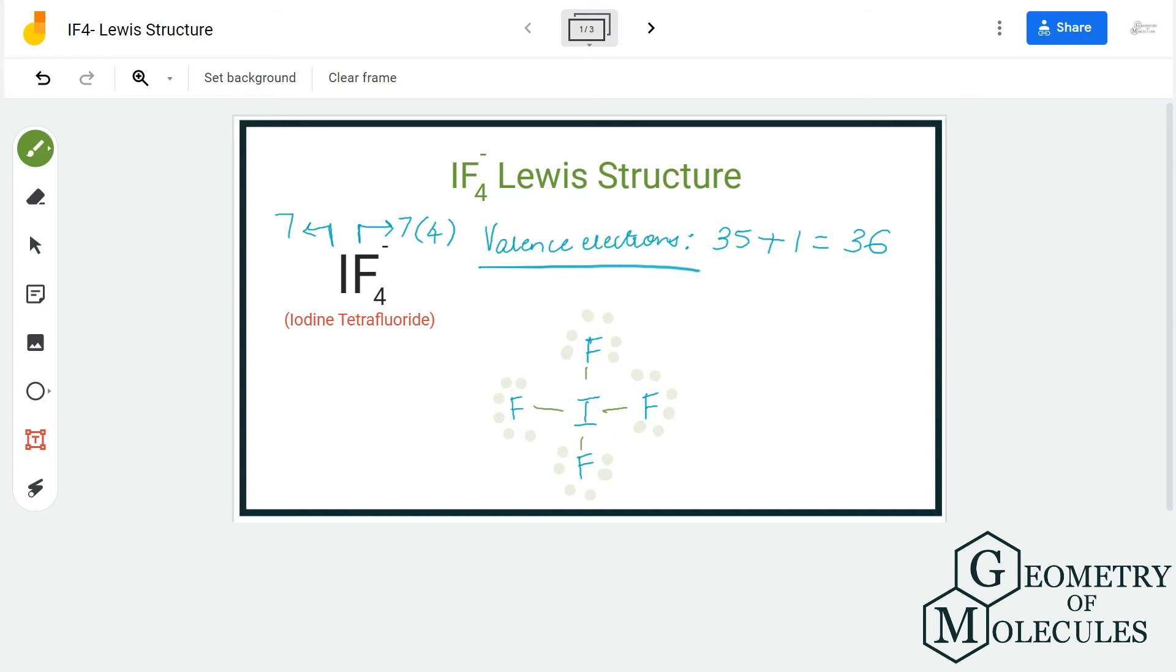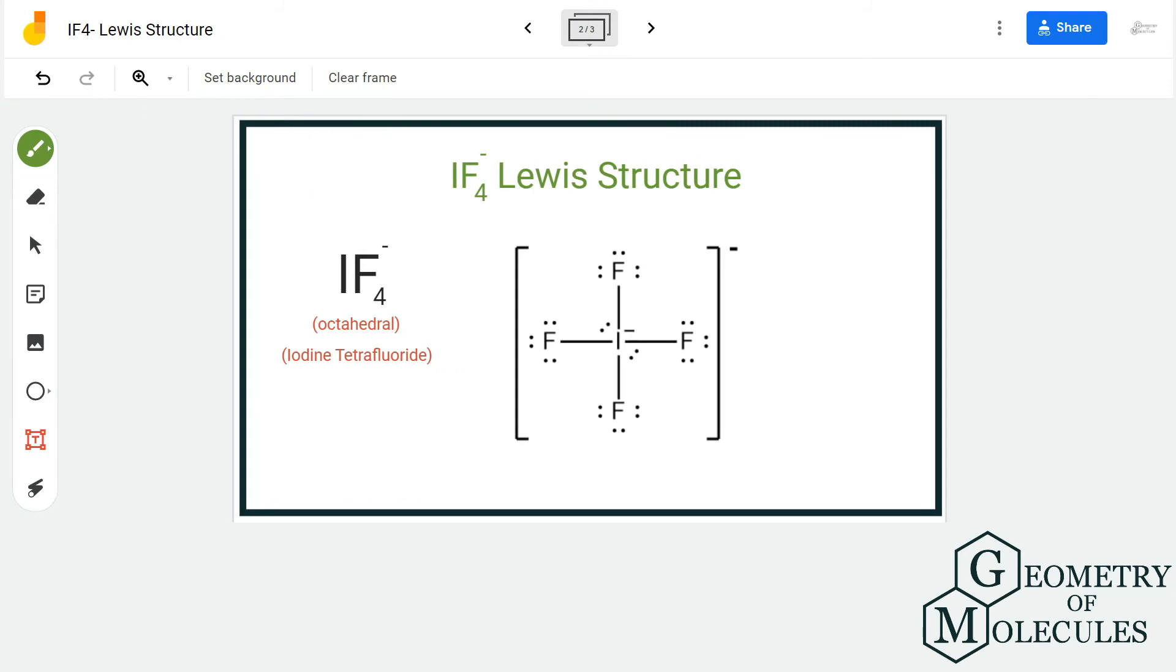Now, fluorine atoms already have complete octets, but if you look at iodine atom, it has shared its electrons with fluorine atom but it will accommodate these four valence electrons as well. So we will place two pairs of electrons on iodine atom like this. So now, the Lewis structure of IF4- ion is complete.